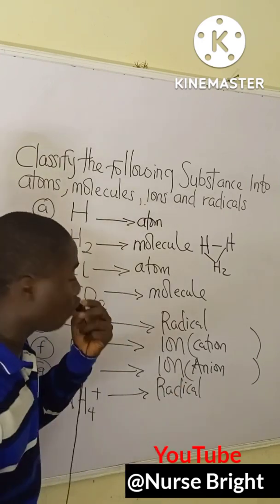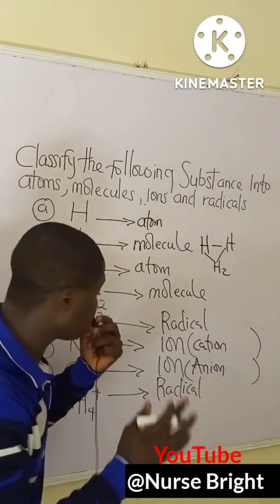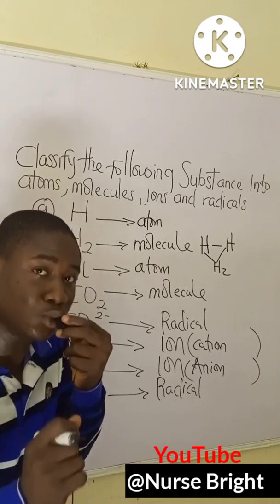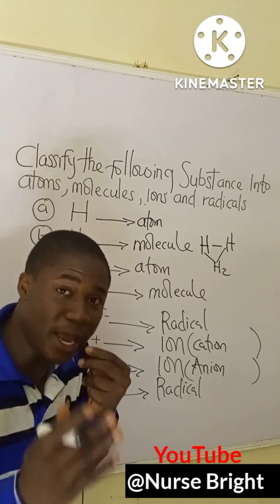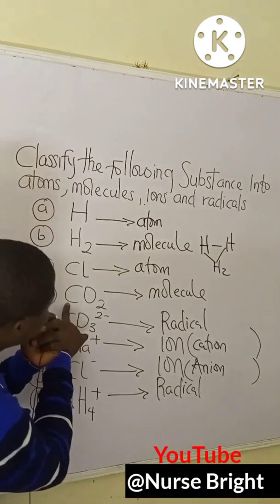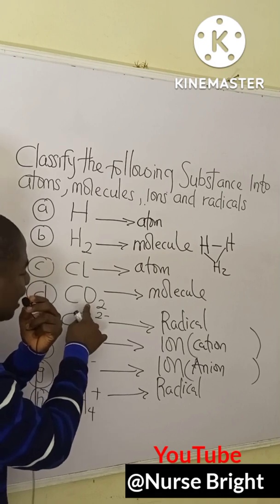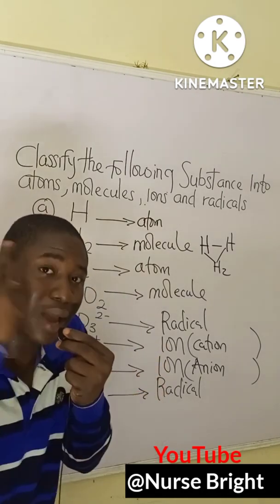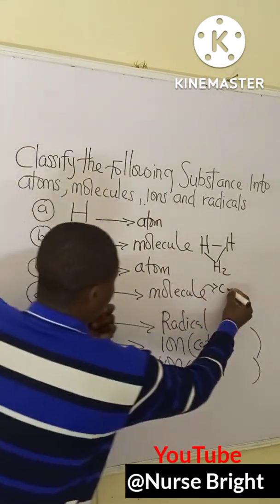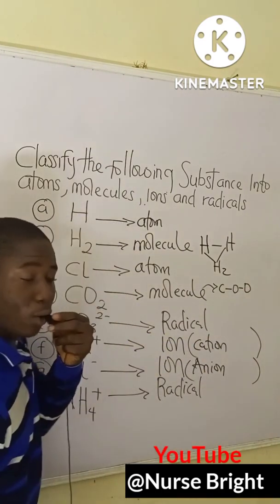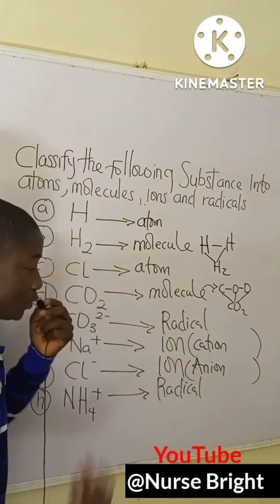Option C is simply chlorine as an element standing alone, so we call it a chlorine atom. Option D is CO₂, which is a molecule because it is made up of different atoms — a carbon atom bonded to two oxygen atoms. When we join them together we have CO₂.